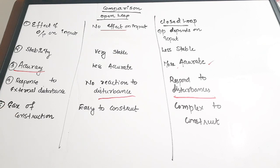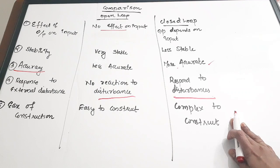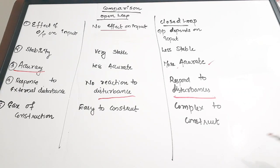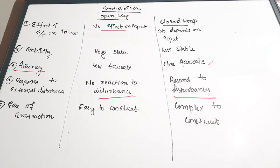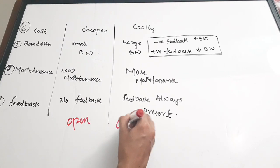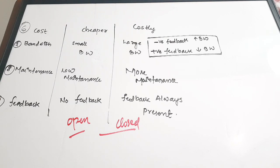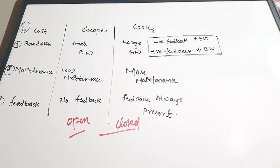The fifth point is ease of construction. As seen from the block diagrams, open loop control systems have comparatively simple structures and are easy to construct, whereas closed loop control systems have complex structures and are difficult to construct. The sixth point is cost: open loop control systems are less complex and cheaper, whereas closed loop control systems are costlier.